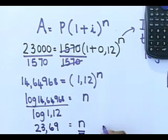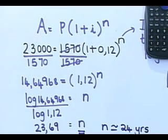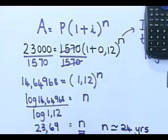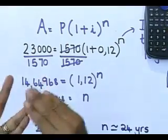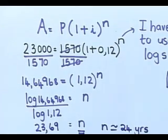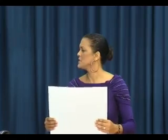If you round to the nearest year, N is approximately 24 years. So how long did it take for 1,570 rand to grow to 23,000 rand with an interest rate of 12% per year — not compounded half-yearly or monthly, just 12%? I got 23.69, so to the nearest year it is 24 years. I hope you understood these three examples.